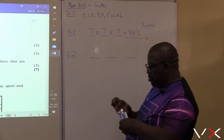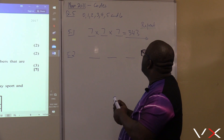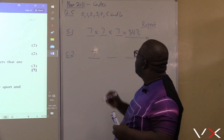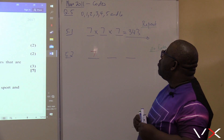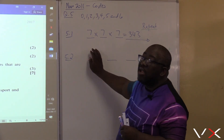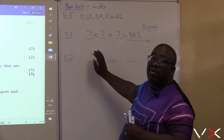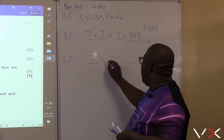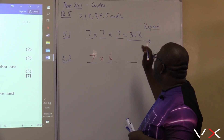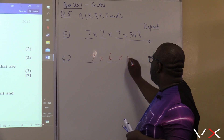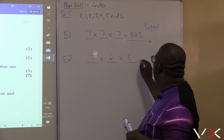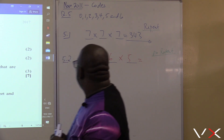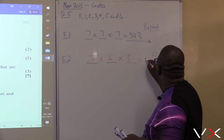In the first position, we know any of those numbers can go here — we've got seven options. Now once you've placed one digit here, how many options do you have for the second position? It will be six — one less. So it is times six. For the third position, how many options? It will be times five. Seven times six times five gives us 210.